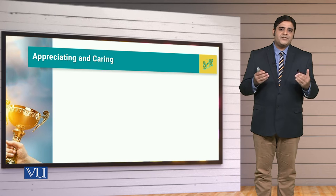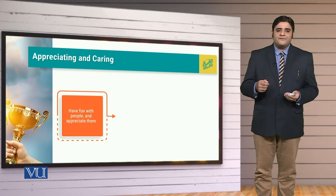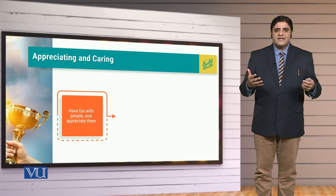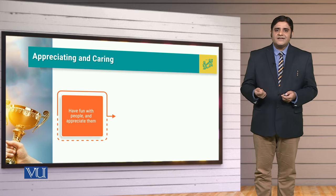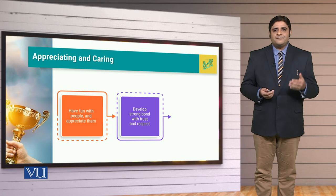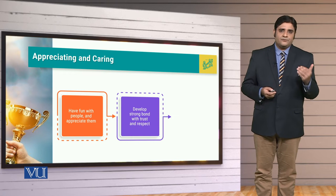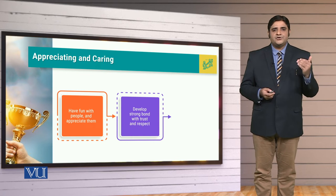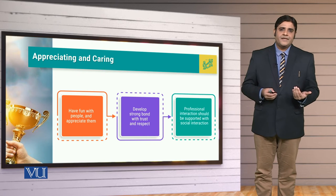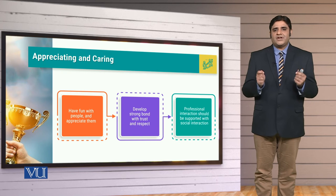Then you have to be appreciating and caring. When we talk about appreciation and caring, remember you have to have fun with the people so that the positivity, so that the energy is always there, and you should be there to appreciate other people. At the same time, develop a strong bond and do not let trust be violated. Trust will not be violated when you learn to respect other people along with the other prerequisites of trust. Remember that professional interaction should be supported with social interaction.